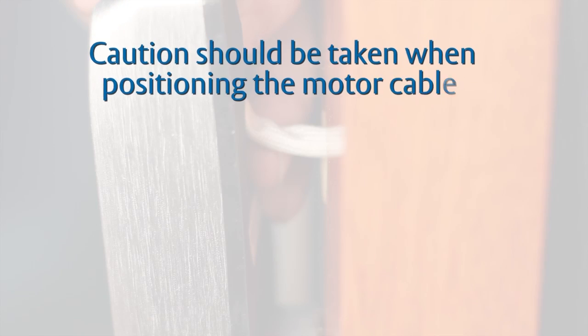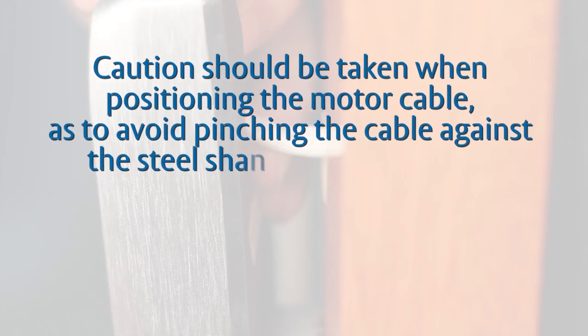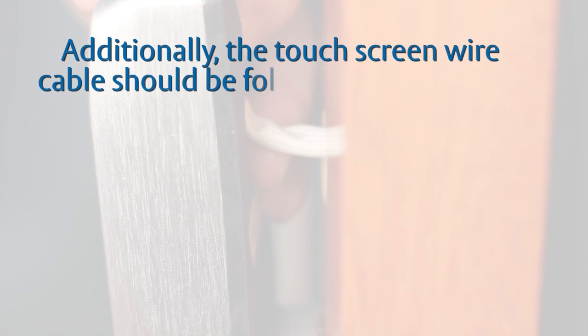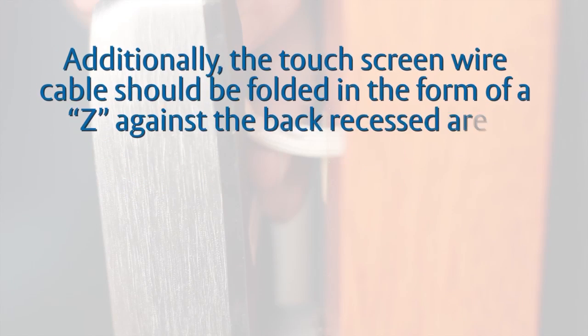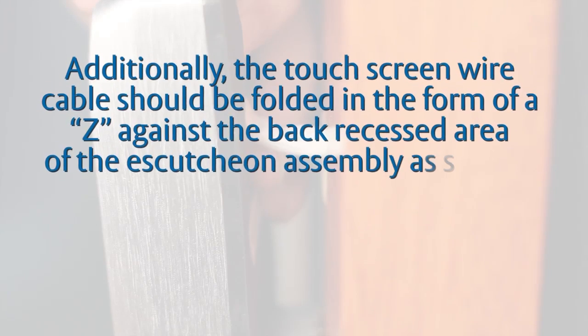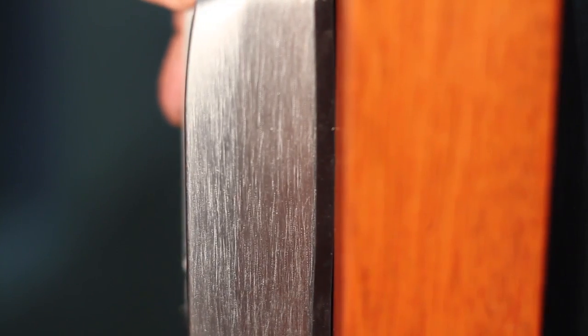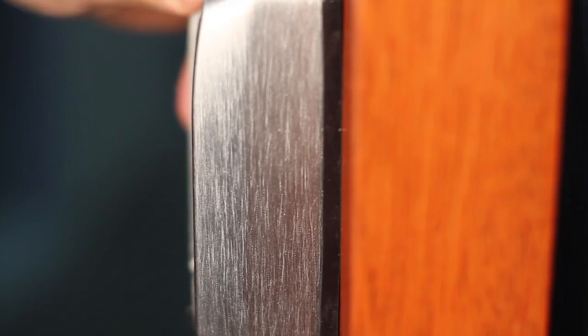Caution should be taken when positioning the motor cable to avoid pinching the cable against the steel shank of the assembly. Additionally, the touchscreen wire cable should be folded in the form of a Z against the back recessed area of the escutcheon assembly as shown. Position and bend the wires to prevent binding when installing the escutcheon over the support assembly.